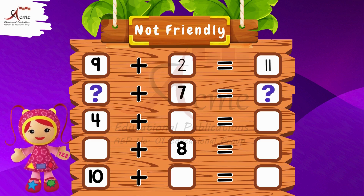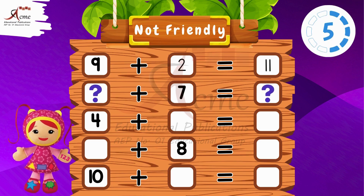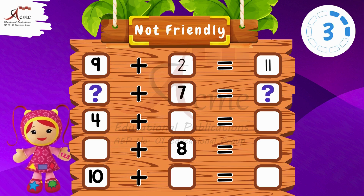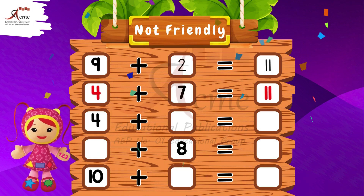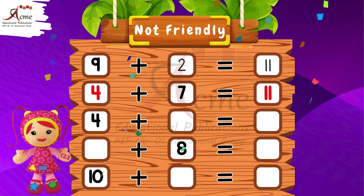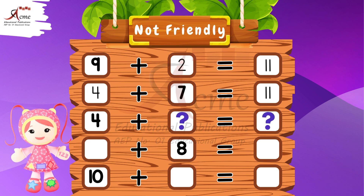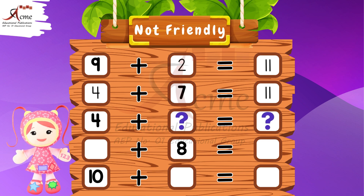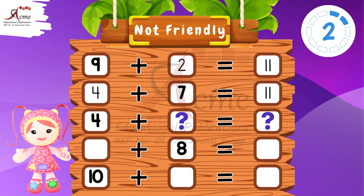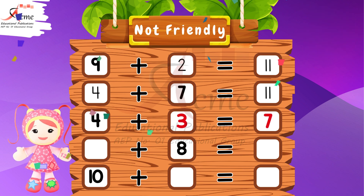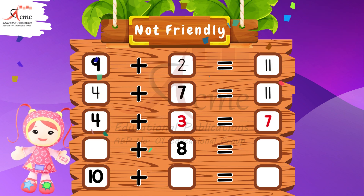What number do we need to add to 7 to make it a non-friendly number? Yes — 4 plus 7 equals 11. Well done. What number do we need to add to 4 to make it a non-friendly number? Correct — 4 plus 3 equals 7. Excellent.